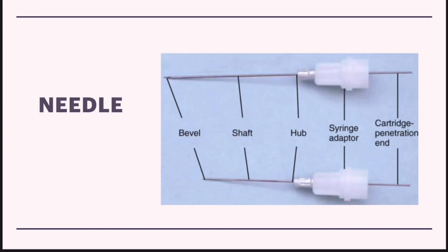Next is the needle. It has various components: bevel, shaft, hub, syringe adapter, and cartridge penetration end. The hub is a plastic or metal piece through which the needle is attached to the syringe.